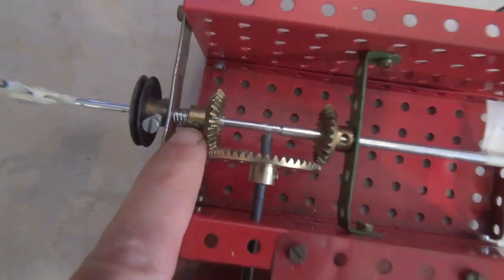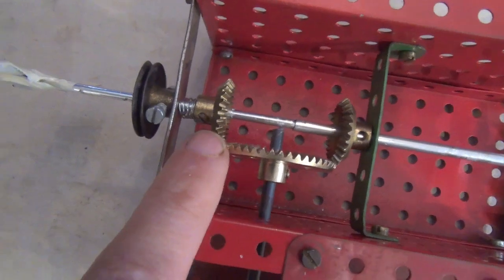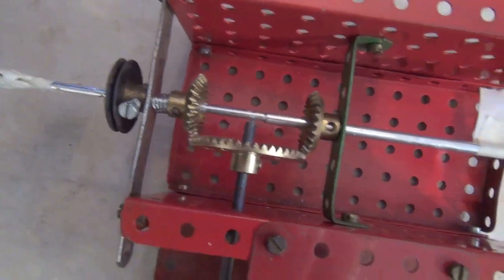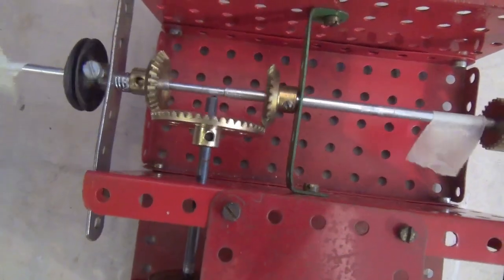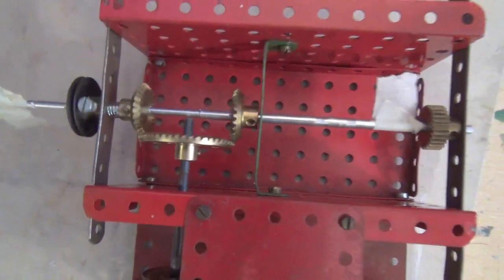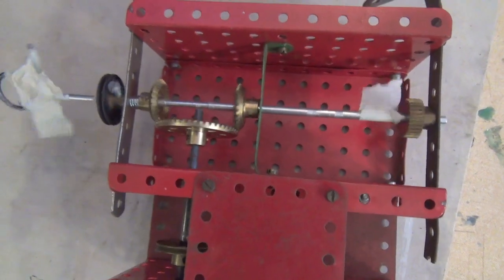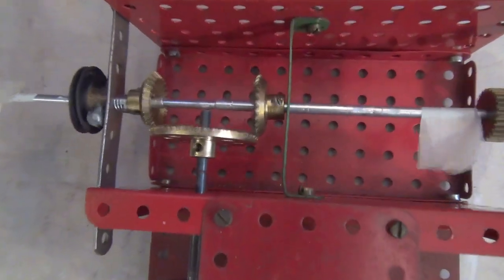I've got a little spring here in the temporary lash up just to put enough tension on this so that it works without me having to adjust it too finely. I don't think we'll need the springs in the final version. So there we are. That's how that part works.